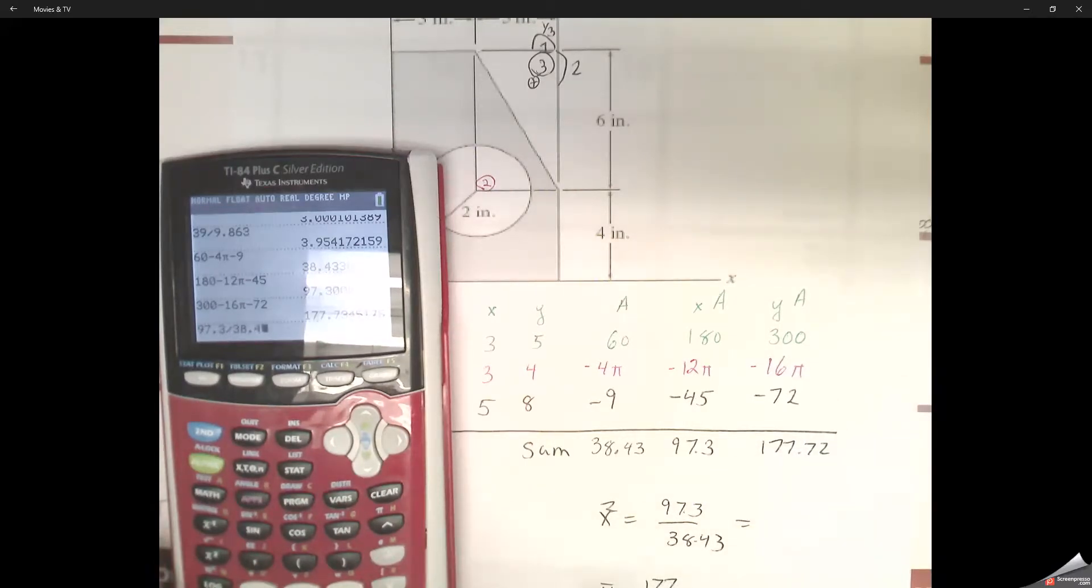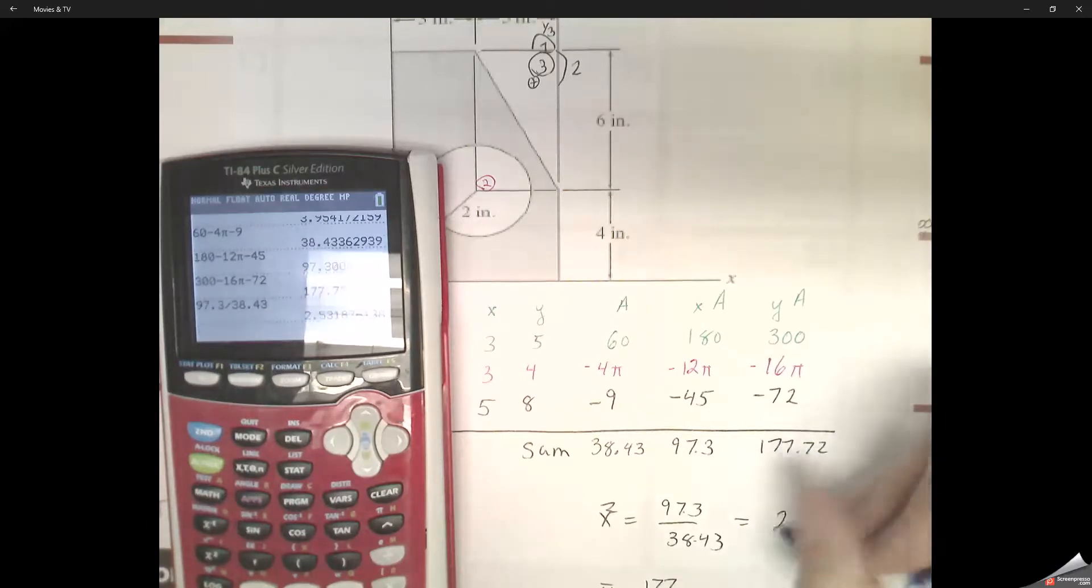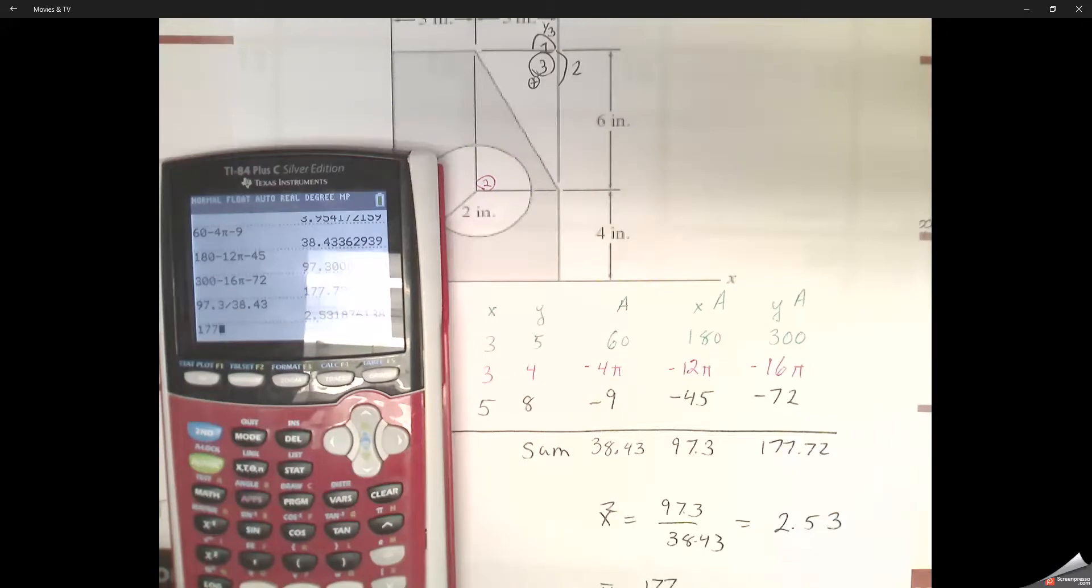So 97.3 divided by 38.43 gives us an x center value of 2.53. And for our y value, we take our 177.72 divided by our 38.43 and end up with about 4.624.